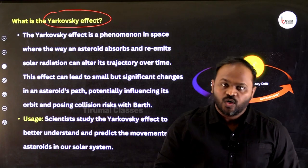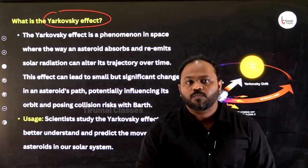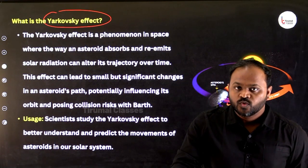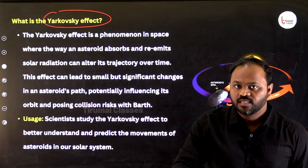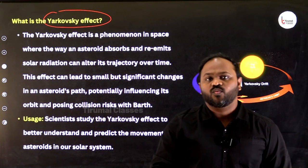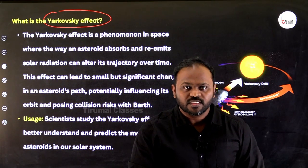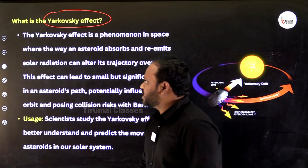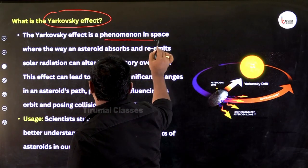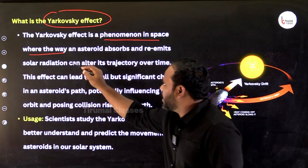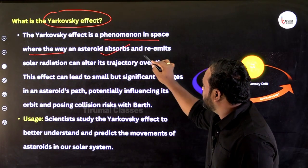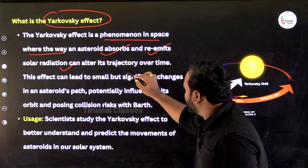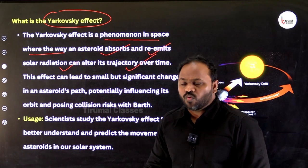The Yarkovsky Effect is generally seen in outer space. There are many asteroids moving towards Earth, some revolving around the Sun, some moving away. There have been many incidents where asteroids have hit Earth's surface and created craters. The Yarkovsky Effect is a phenomenon in space where the way an asteroid absorbs or emits solar radiation can alter its trajectory over time.